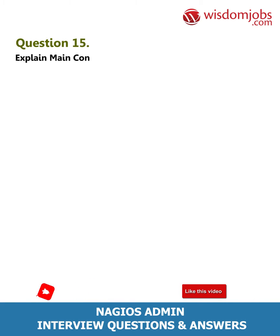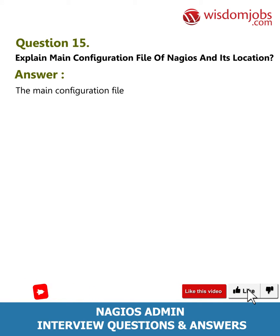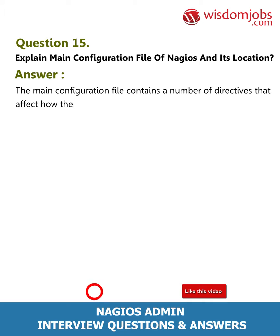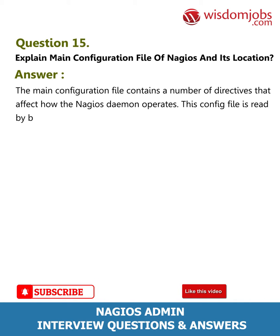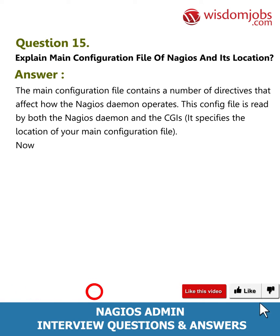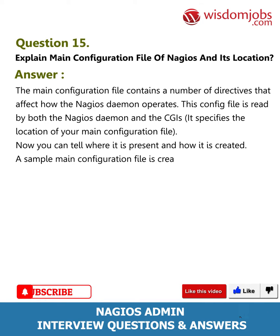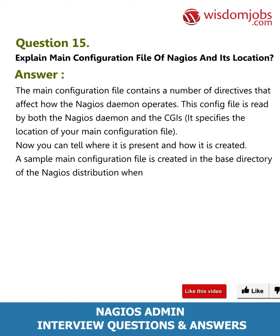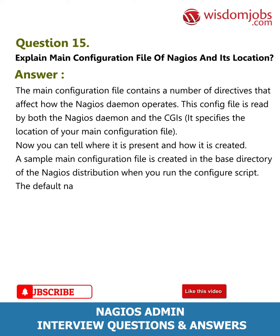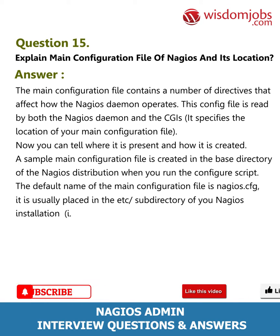Question 15: Explain the main configuration file of Nagios and its location. Answer: The main configuration file contains a number of directives that affect how the Nagios daemon operates. This config file is read by both the Nagios daemon and the CGIs. A sample main configuration file is created in the base directory of the Nagios distribution when you run the configure script. The default name is nagios.cfg, and it is usually placed in the etc/ subdirectory of the Nagios installation, i.e., /usr/local/nagios/etc/.